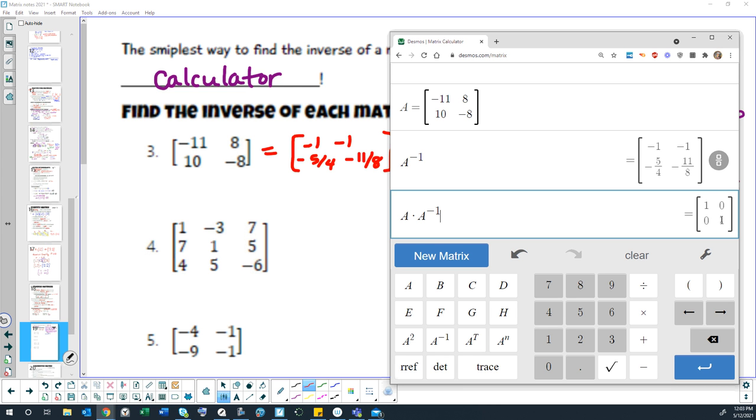Does that help me prove that this really is the inverse of this? If I multiply them together and I get the identity, does that make sense? That's a way of verifying that it worked. So this matrix and this matrix are inverses of each other because if we multiply them together, we get the identity matrix.